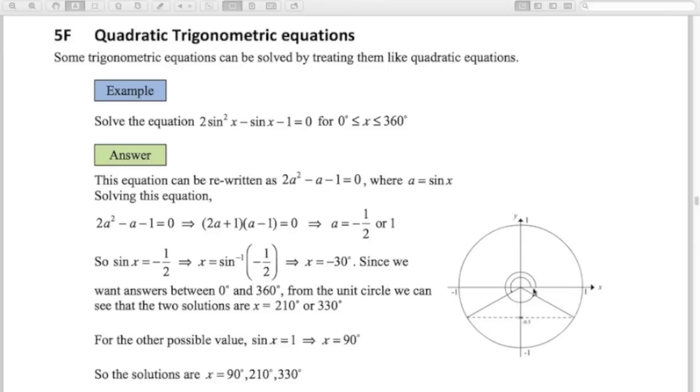Sine of x equals minus 1 half. You can see my unit circle. Shift sine negative 1 half gives me x is minus 30. Now, you can see the problem there. Minus 30, we only want solutions between 0 and 360. So instead of saying that that angle is minus 30, I'm going to call it 330. Same angle, 360 minus 30.